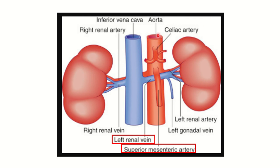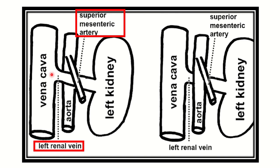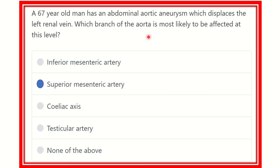Other branches such as the celiac artery lie more above, and the inferior mesenteric artery lies more below, so they will not be affected. The testicular branches also lie more below, so they will not be affected. In this picture, we can see the inferior vena cava and the abdominal aorta. From the inferior vena cava, the left renal vein goes to the kidney, and just in front of the left renal vein is the superior mesenteric artery.